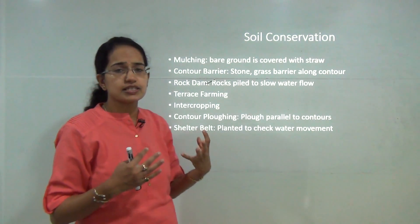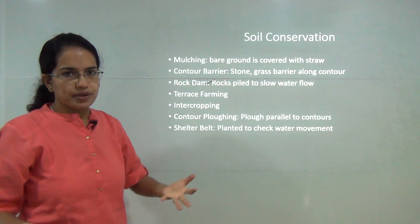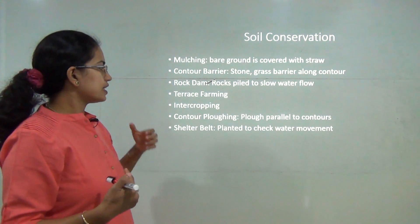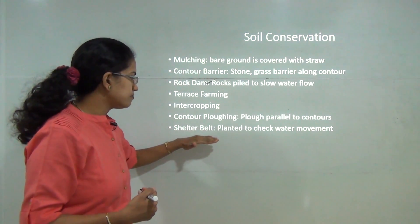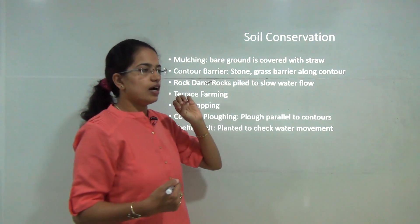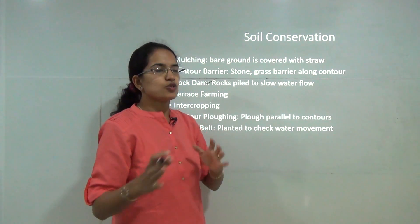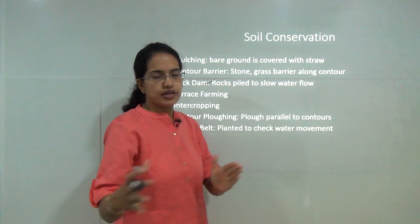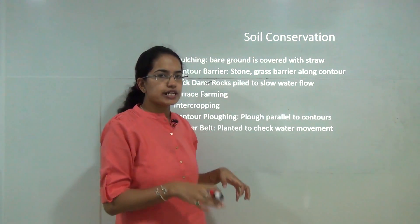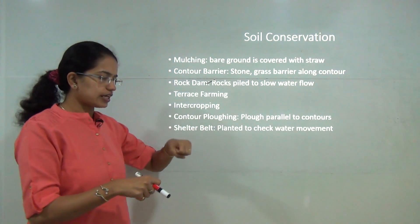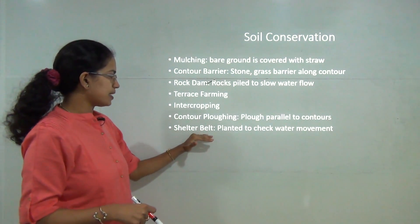To conserve soil, afforestation is a key step. Specifically, shelter belts - plants grown in wind-prone areas - act as barriers that check wind and water movement and bind the soil, preventing topsoil from being blown away during high winds.